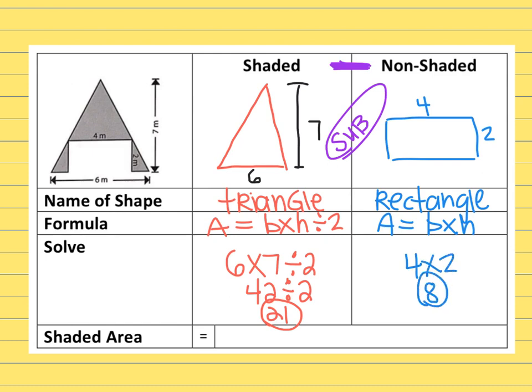And then remember at the top I was saying that you needed to subtract those two. My final answer—the total area of leftover shaded space—would be 21 minus eight. That leaves me with 13, and this was meters. 13 square meters would be my final answer for the remaining shaded space.